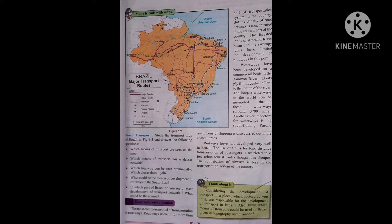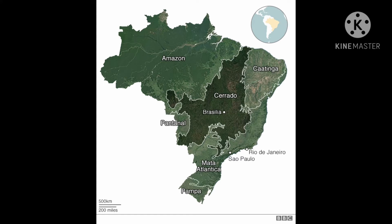In which part of Brazil do you see a lesser development of transport network, and what could be the reason? Amazon in the north and Pantanal in the west have lesser development of transport network. The reason is that Amazon has dense forest cover, whereas Pantanal is a swampy land — meaning wet land — and hence the transport network is not developed in these areas.